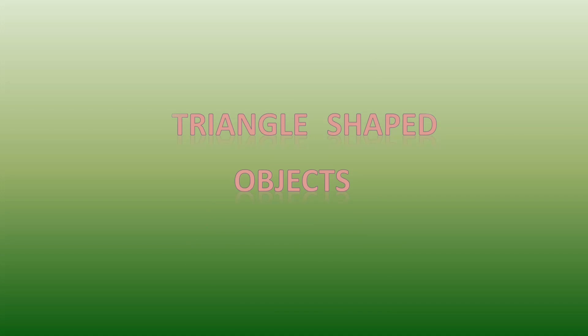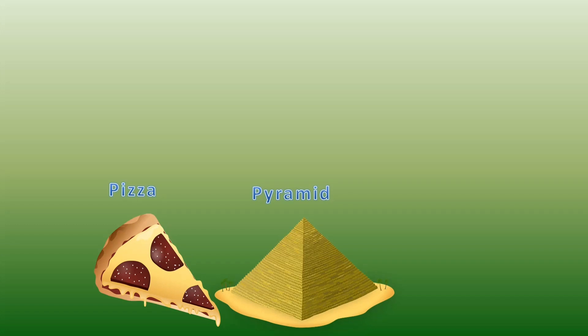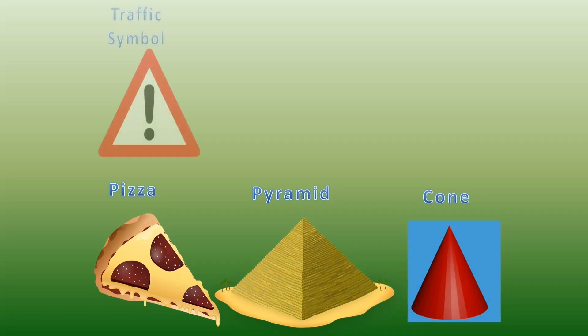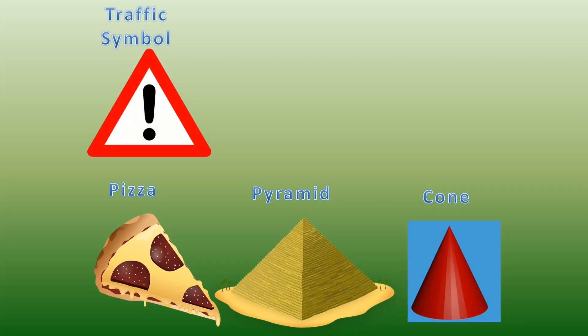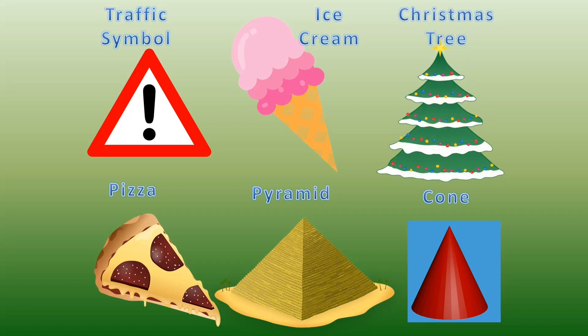Now we can see the objects which are triangle in shape. Pizza, pyramid, cone, traffic symbol, ice cream, and Christmas tree.